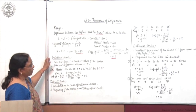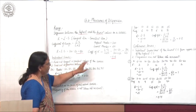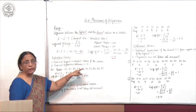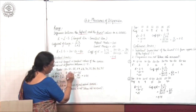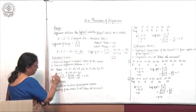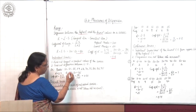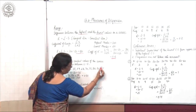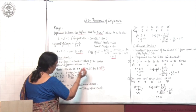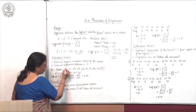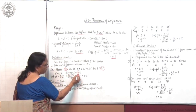Now let us see how the calculation is done for different types of series. In an individual series, find the largest and smallest values, then find the difference L minus S. Suppose marks are given — write the formula R = L minus S. Here L is the largest value; S is the smallest, which is 50. So R = 95 minus 50 = 45.